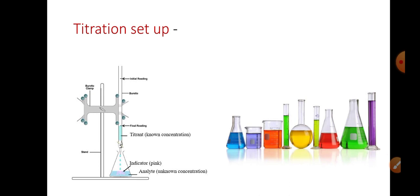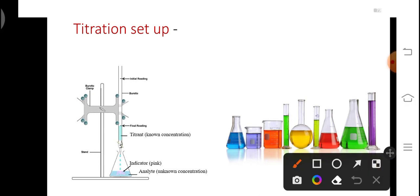Other than this, we may also require some glassware such as a conical flask, beaker, measuring cylinder, and round bottom flask.